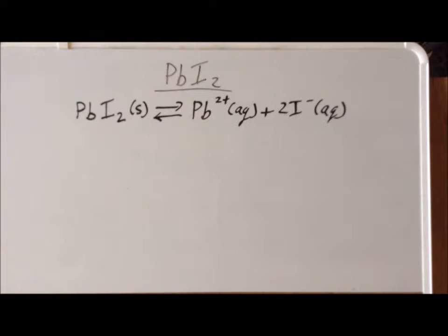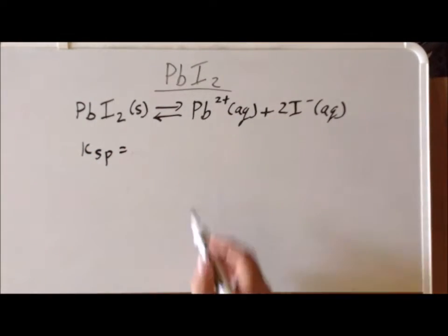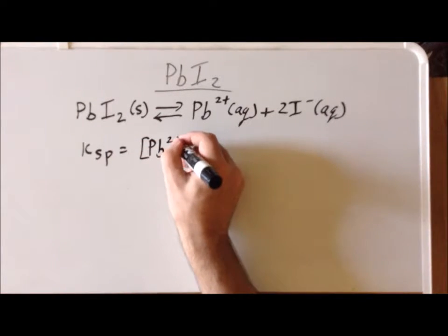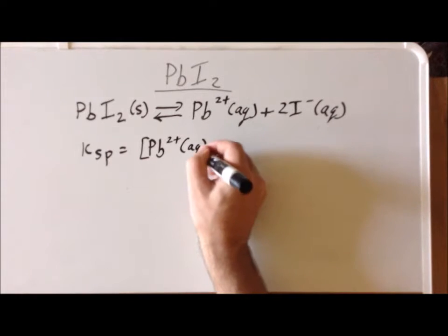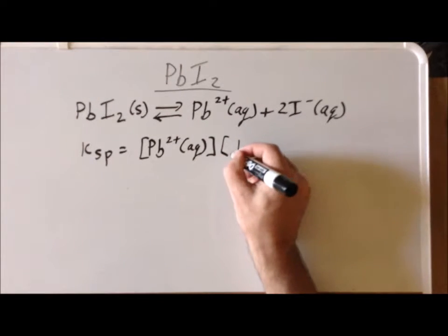The next thing we want to do is write the expression for the equilibrium constant. This is our Ksp. As we recall, we put the products as the numerators. First we have the concentration of lead 2+ aqueous. We also recall that whereas we add together the products in the reaction, when we write the equilibrium constant expression, we multiply the relevant concentrations. So we have the concentration of iodide here.